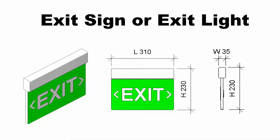Hello everyone. Today I would like to show you how to create an exit sign or exit light Revit family with a 2D symbol. In this video, I will create two parts of the family: main family and 2D annotation family, and then load and combine them into the main family. I will refer to the dimensions in the picture to create the parameters.